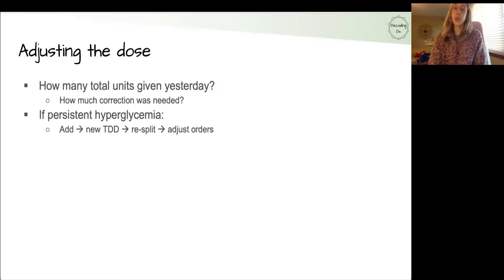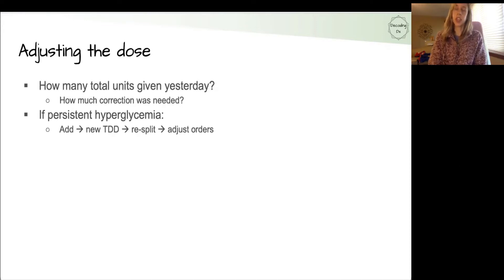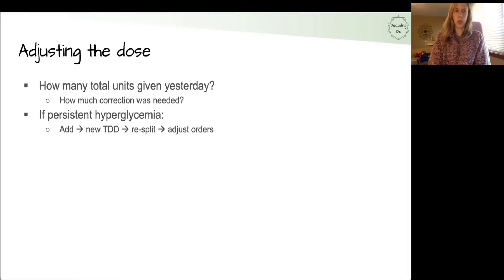With that new total daily dose of everything added together, you can then re-split it as we discussed in the previous episode: 50% bolus and 50% basal, then divided by meals. You input those numbers to adjust your orders and repeat the process the next day until their sugar is well controlled.